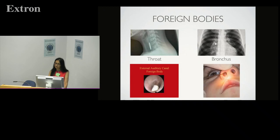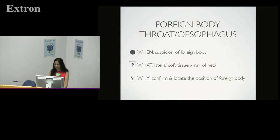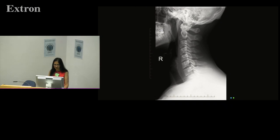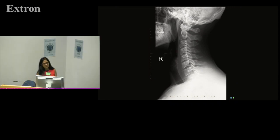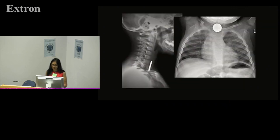When it comes to foreign bodies, we are of no use for foreign body of the ear or nose because you deal with those without radiology. We do come into use when there are throat foreign bodies or foreign bodies in the bronchus. When there is a suspicion of a foreign body in the throat, you would do a lateral soft tissue x-ray of the neck to confirm and locate the position. The normal pre-vertebral tissues are less than two millimetres on a lateral view of the neck.